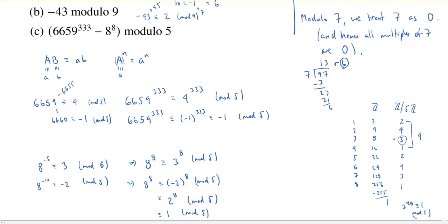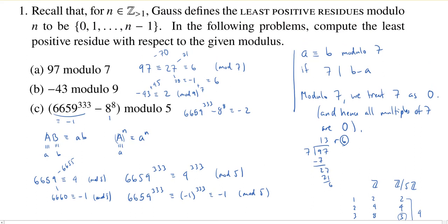So in total, our 6659 to the 333rd power was the same as negative 1. And our 8 to the 8 was the same as positive 1. So we get negative 1 minus 1, which is negative 2. So 6659 to the 333rd power minus 8 to the 8 is congruent to negative 2. Now, that's not the final answer because we wanted the least positive residue. So we need something between 0 and 4. But that's easy enough. If I add 5, which we're treating as 0, then this gives me a 3 modulo 5. And there's our answer.